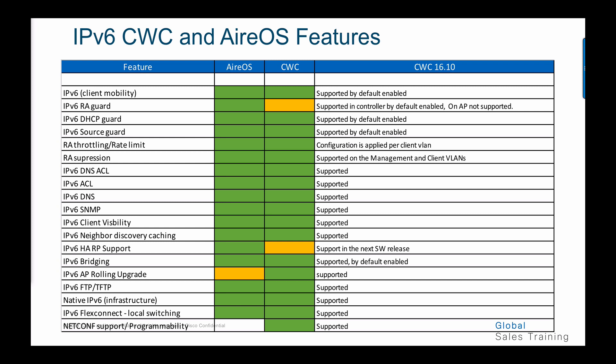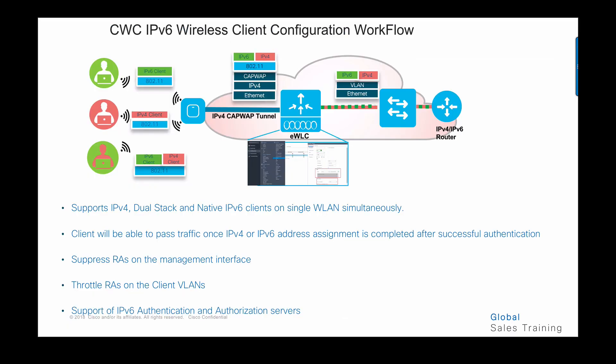As you can see in this table, many other features are supported now on ARS controller and on CWC controller release 16.10. Cisco wireless controllers support two modes of IPv6 configuration: wireless client support and IPv6 infrastructure support.